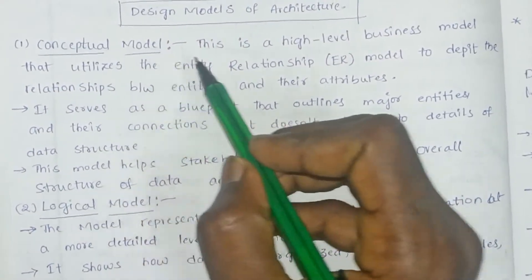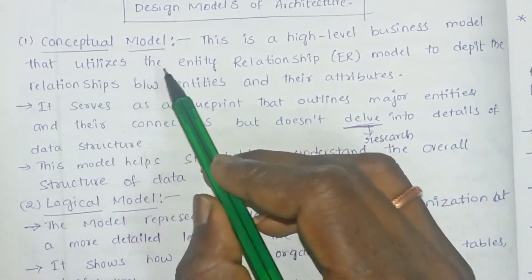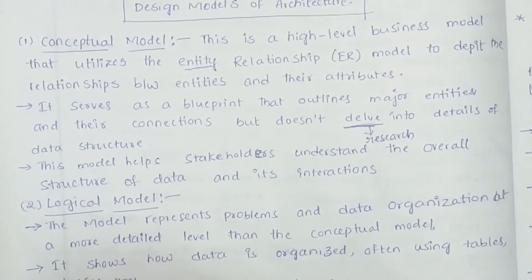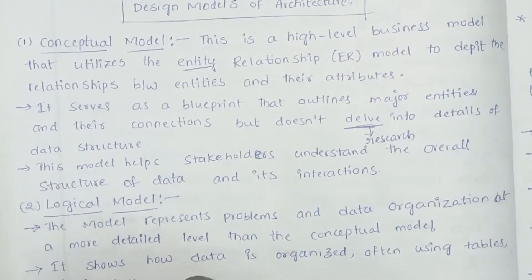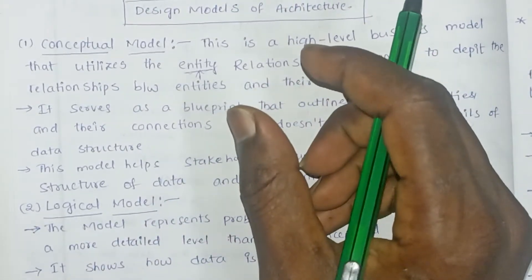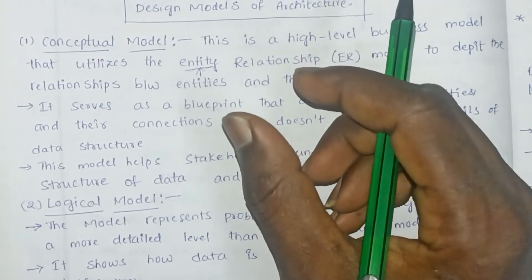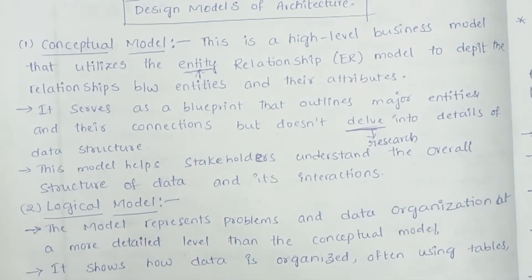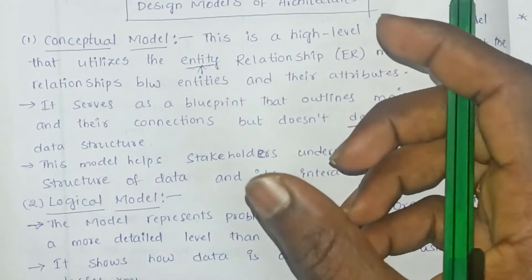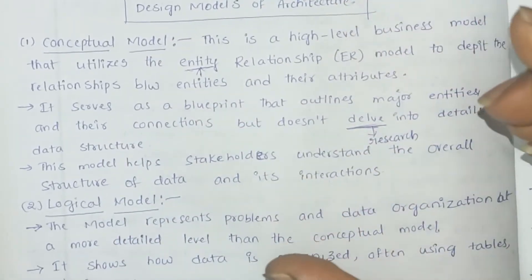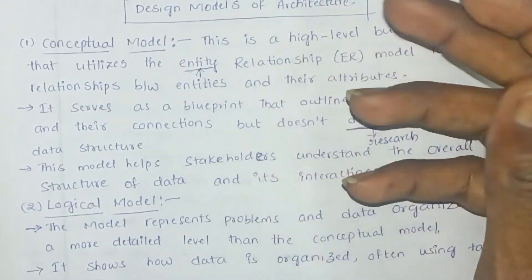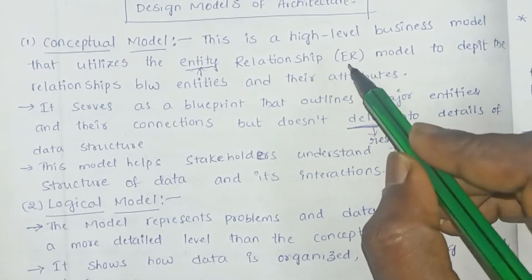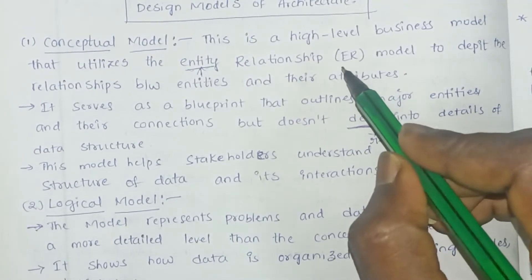The conceptual model is a high-level business model that utilizes entity-relationship concepts. An entity is an object in a database — for example, a customer. The related attributes for the entity 'customer' would be customer name, customer ID, customer order details, and so on. The relationship between the entity and its attributes is represented as an ER diagram, which is a diagrammatic format for entity relationships.